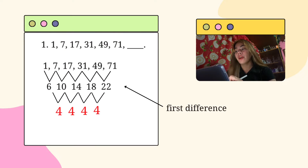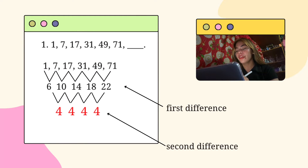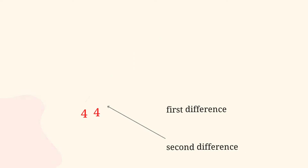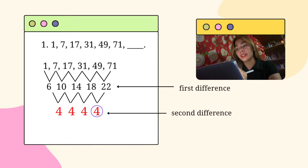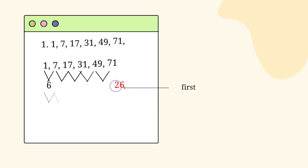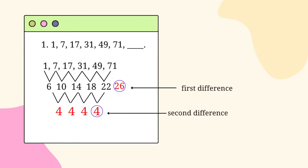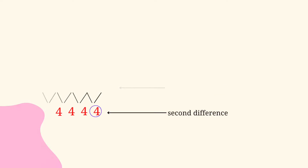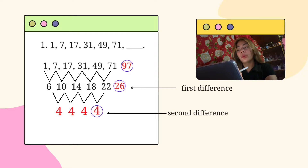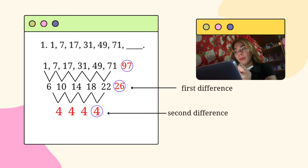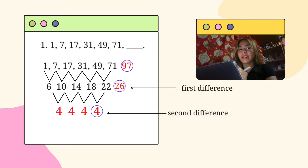Then we proceed to finding the second difference. For the second difference, we will use the same procedure that we used in the first difference. We will add the second difference repeating term to the last term in the first difference, and lastly we will add the number we got on the first difference to the last term in our problem in order to get the number 97.